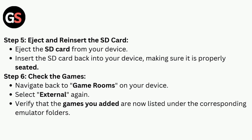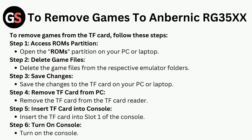Step 5: Eject and reinsert the SD card. Eject the SD card from your device, then insert it back in, making sure it is properly seated. Step 6: Check the games. Navigate back to game ROMs on your device, select External again, and verify that the games you added are now listed under the corresponding emulator folders.